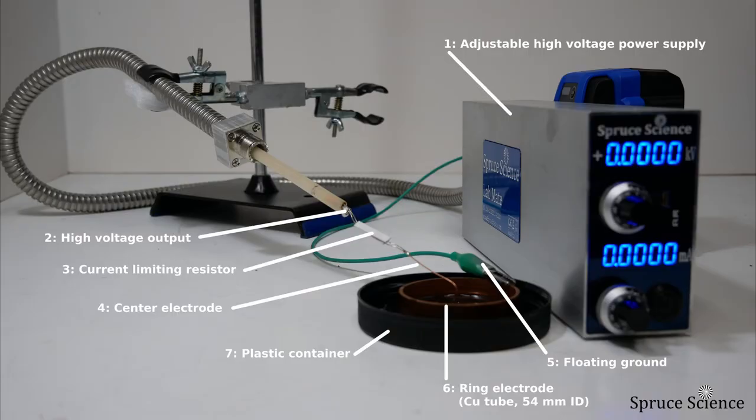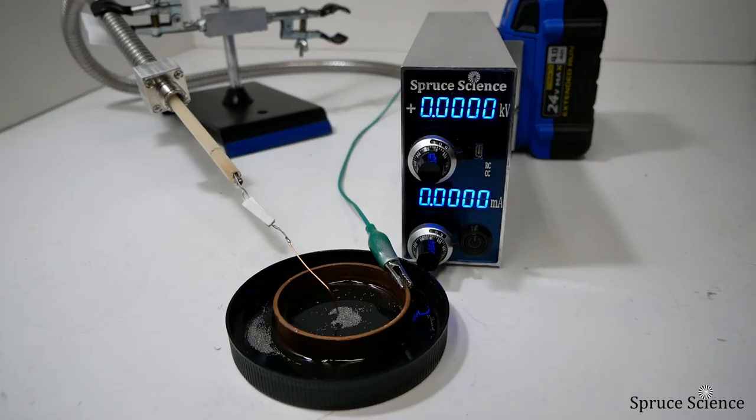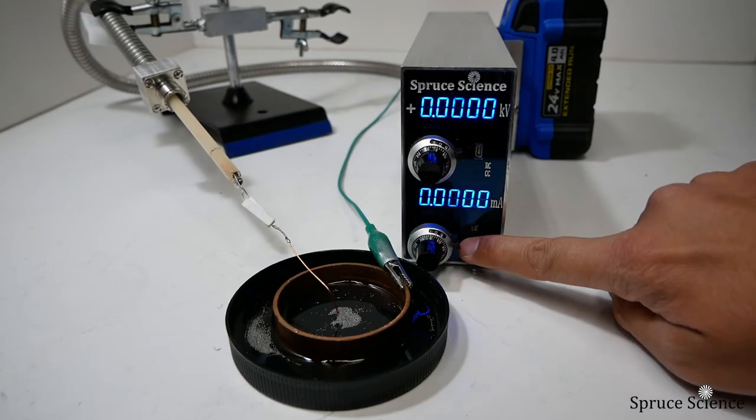The plastic container is a lid we had lying around in lab. It holds the electrodes, solder balls, and the oil.